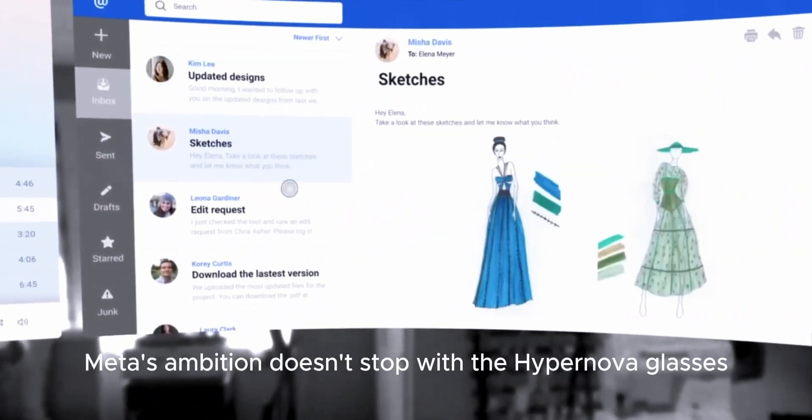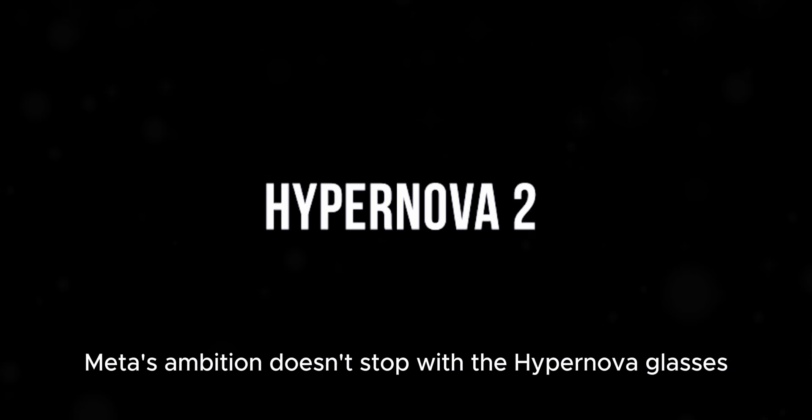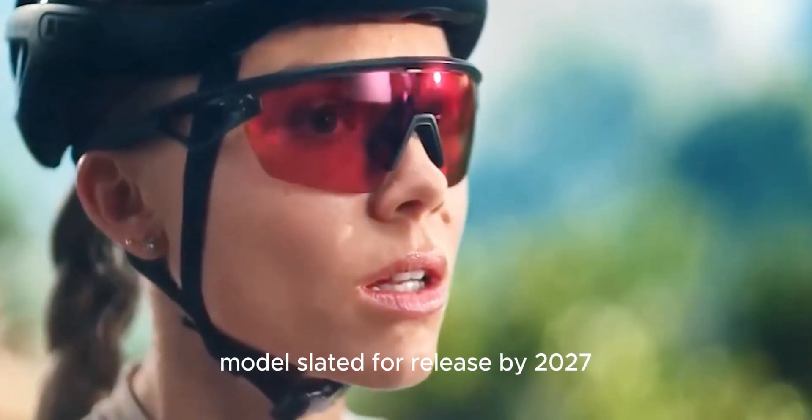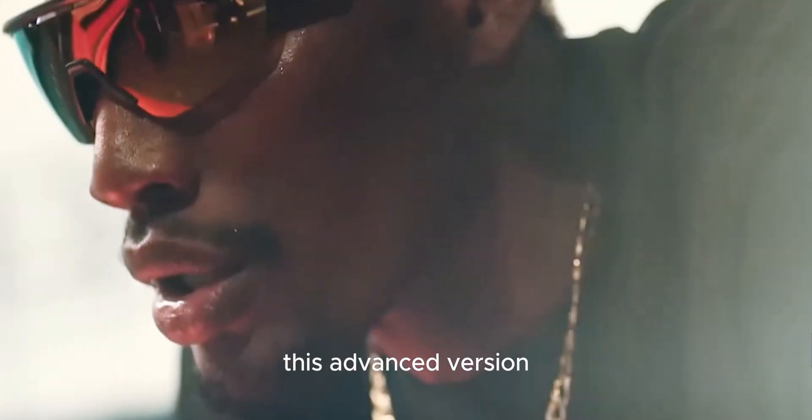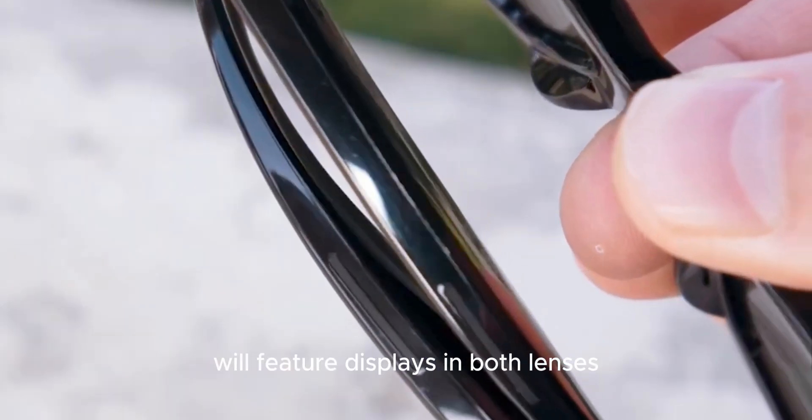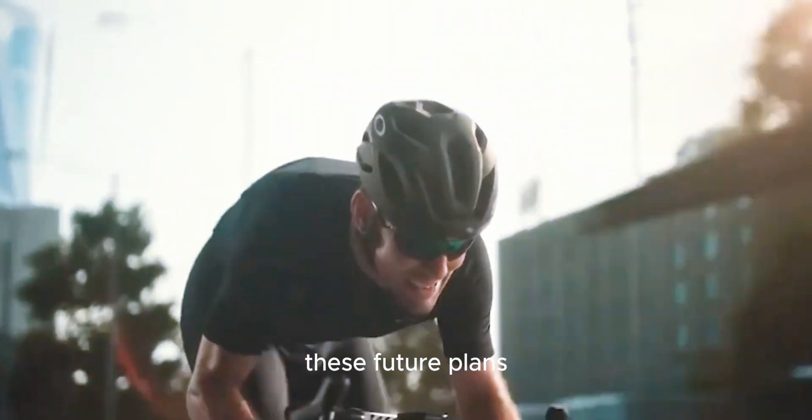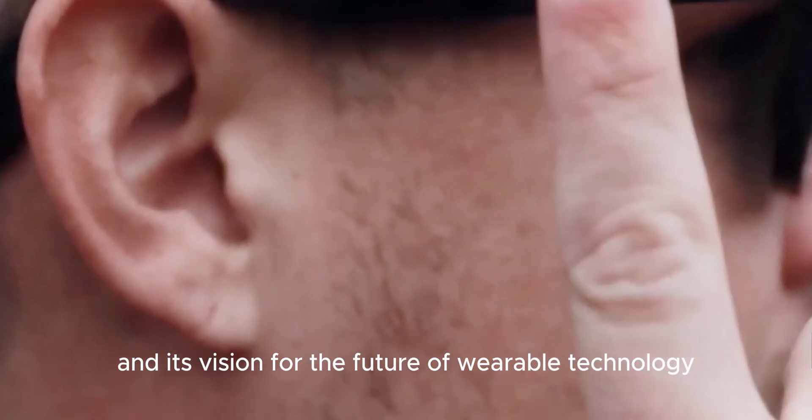Meta's ambition doesn't stop with the Hypernova glasses. The company is already working on a next-generation model, slated for release by 2027. This advanced version will feature displays in both lenses, further enhancing the user experience. These future plans underline Meta's commitment to innovation and its vision for the future of wearable technology.